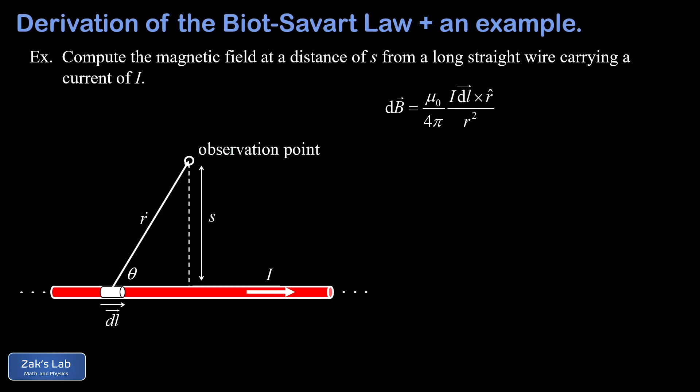We put the r-hat unit vector into the diagram — length one, same direction as the position vector. The magnetic field contribution from dl requires taking dl (pointing right) crossed into r-hat; sweeping the right hand from dl to r-hat, the thumb points out of the page. For every slice along the entire wire this cross product gives an outward contribution, so all the dB vectors point in the same direction and their magnitudes simply add.